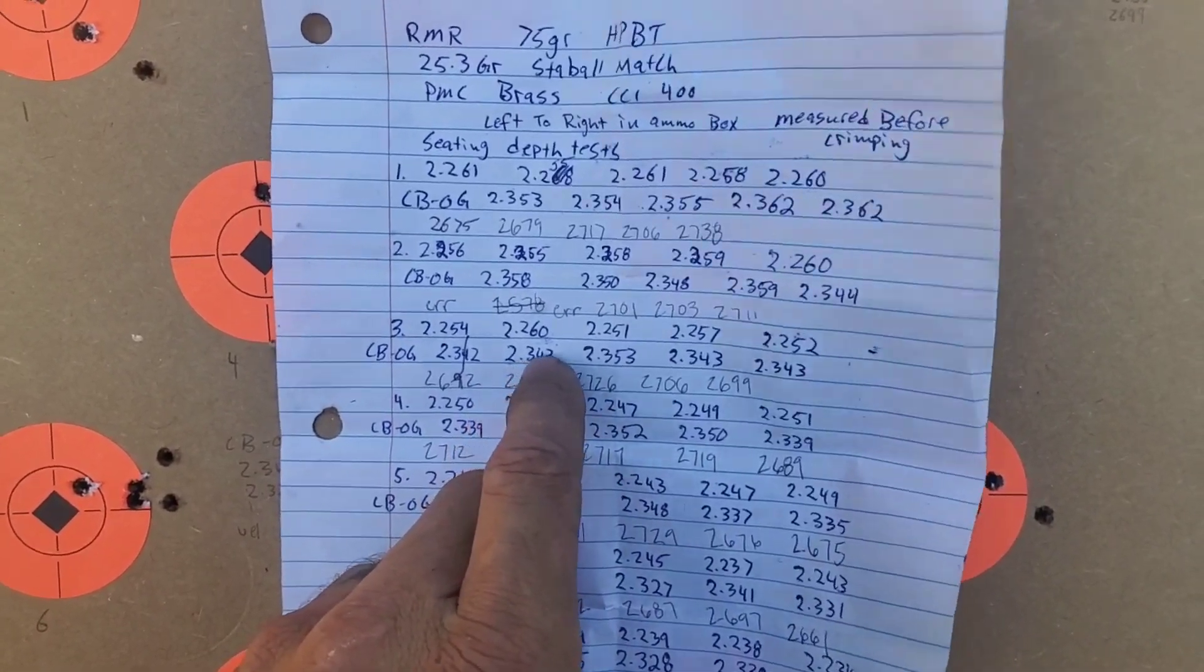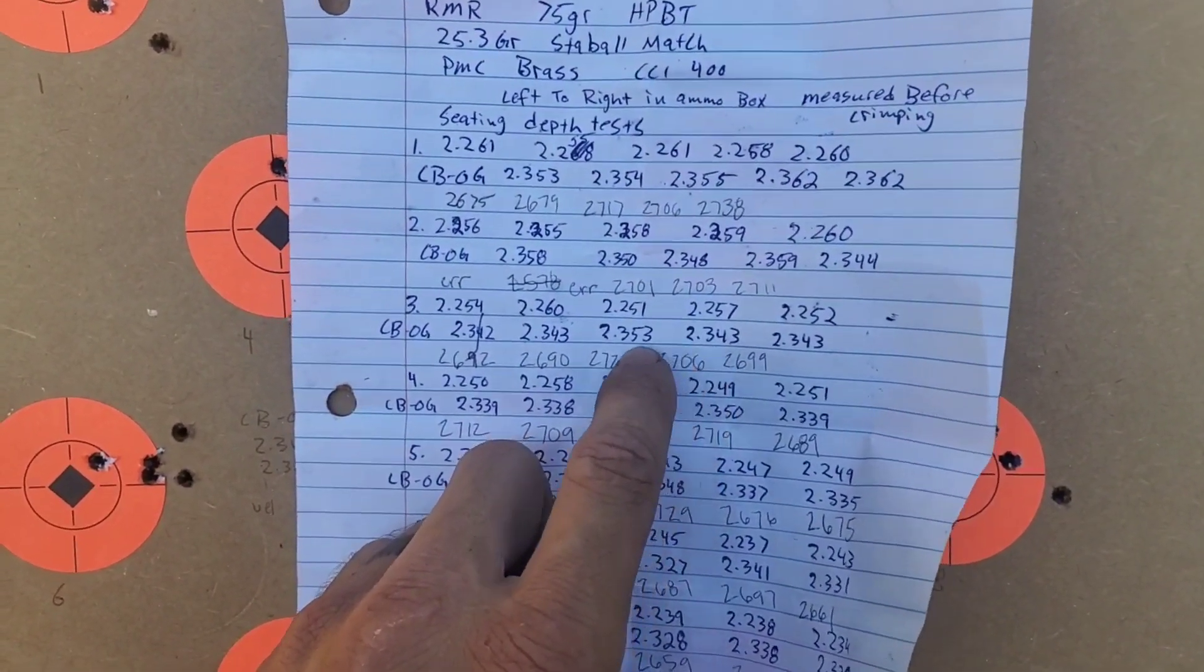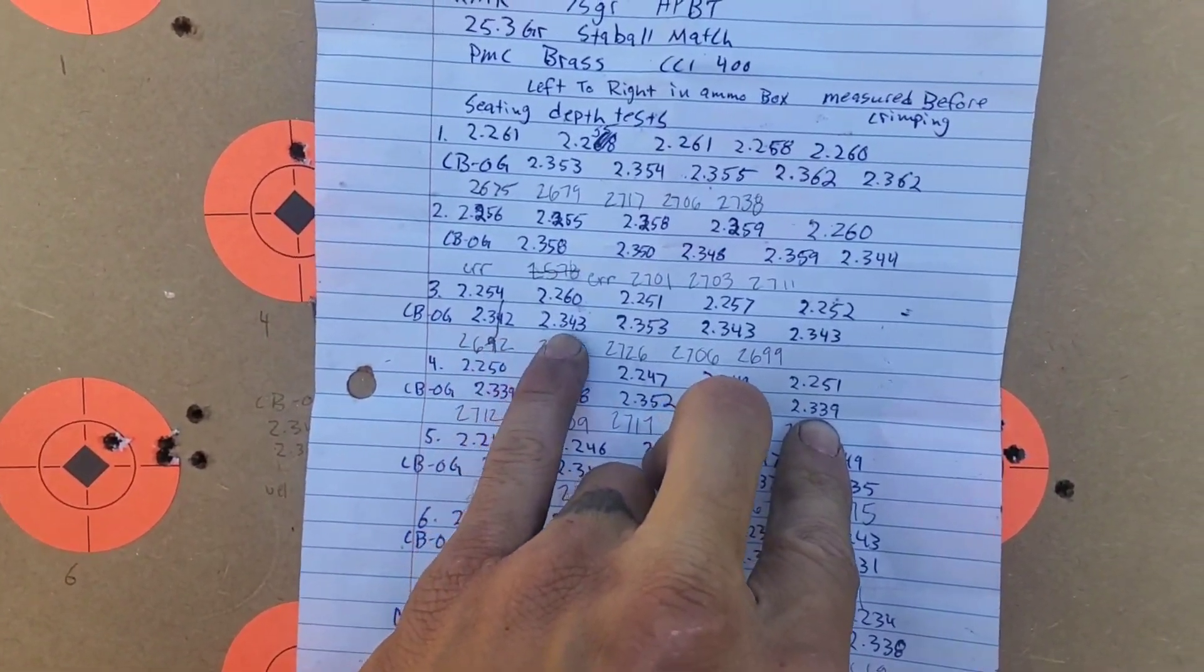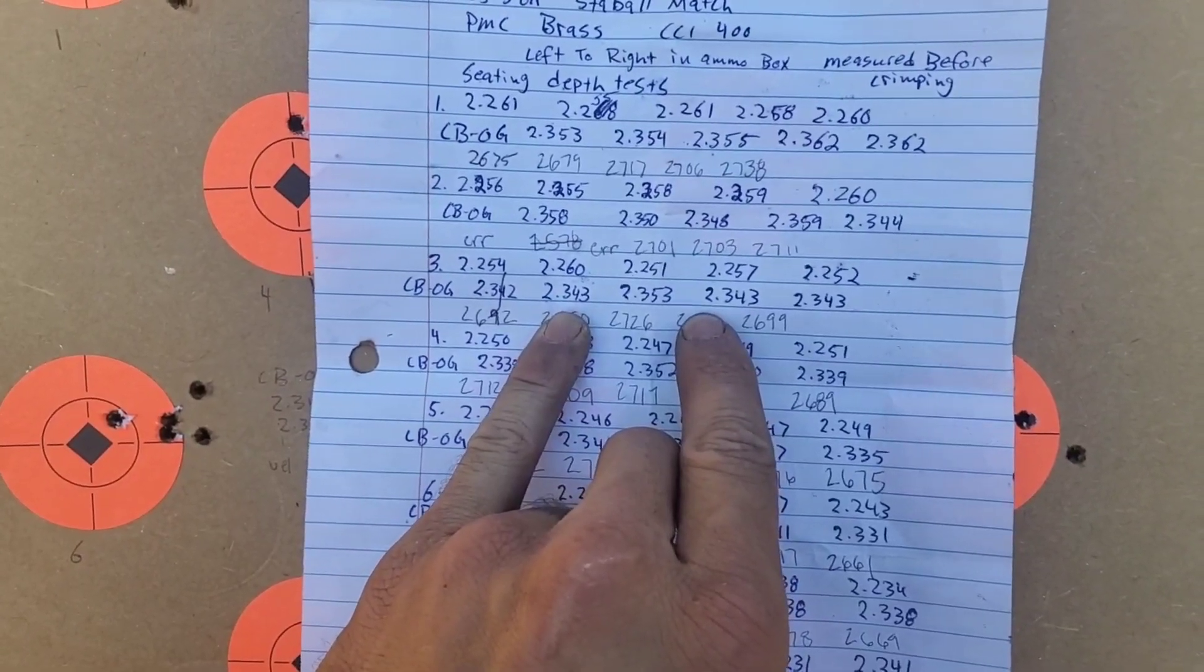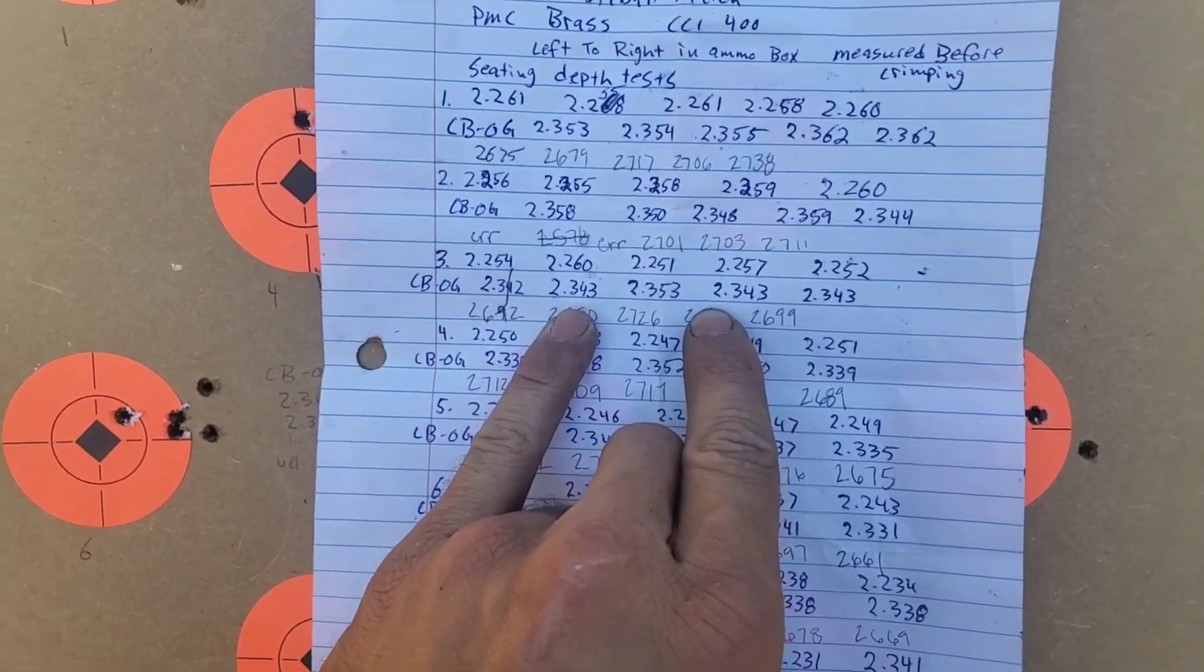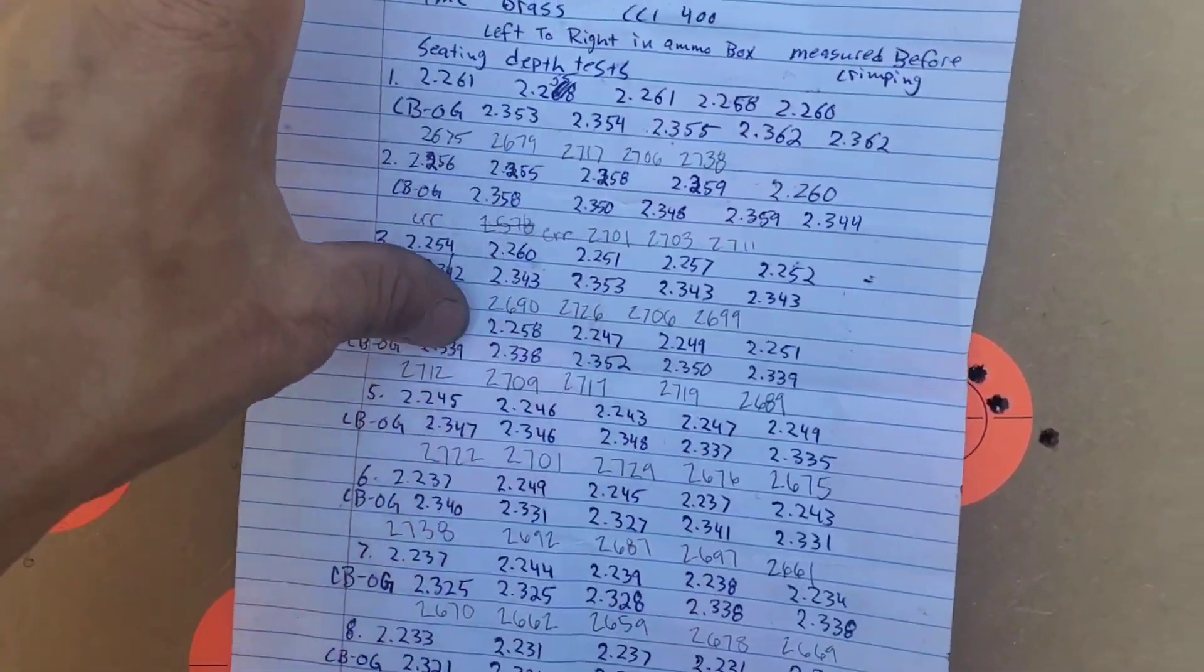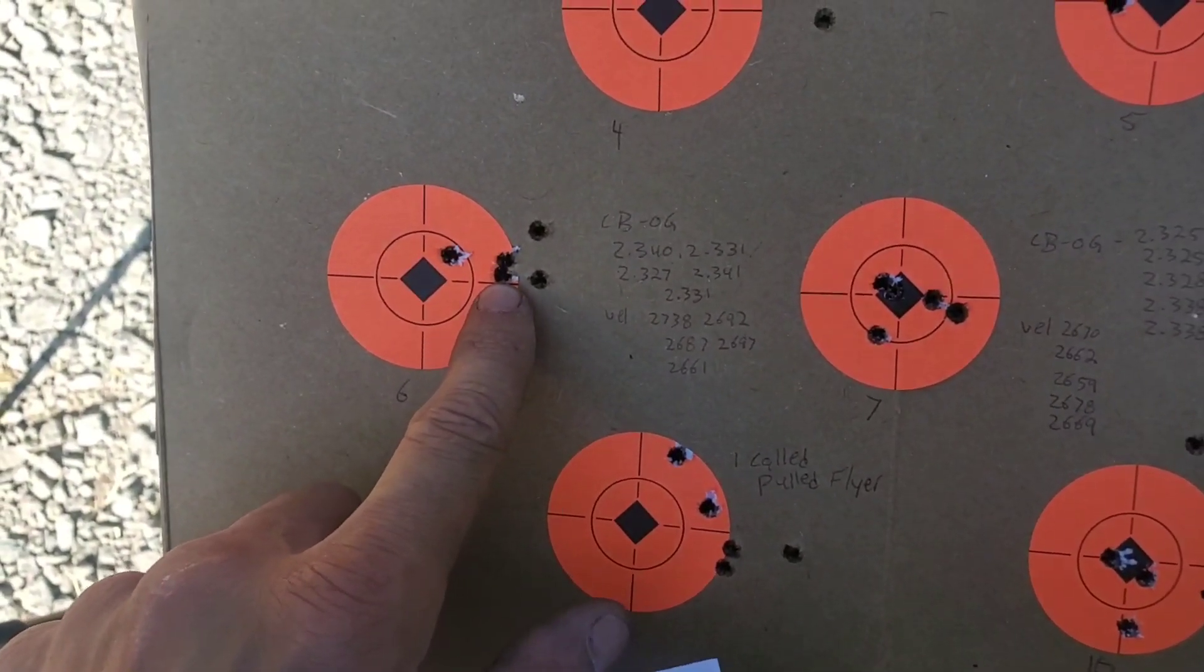But what I'm going to do is I'm going to come back to my seating depths that looked good, and I'm going to do a 3 thousandths spread in those seating depths and see if I can narrow it down to find a really nice zone where they do well. So number 3, number 6, and number 7 looked pretty promising. And number 6 and number 7 especially because they're right next to each other.